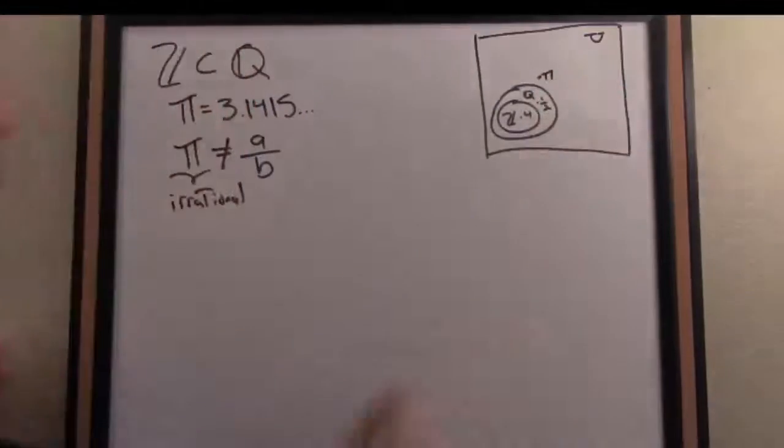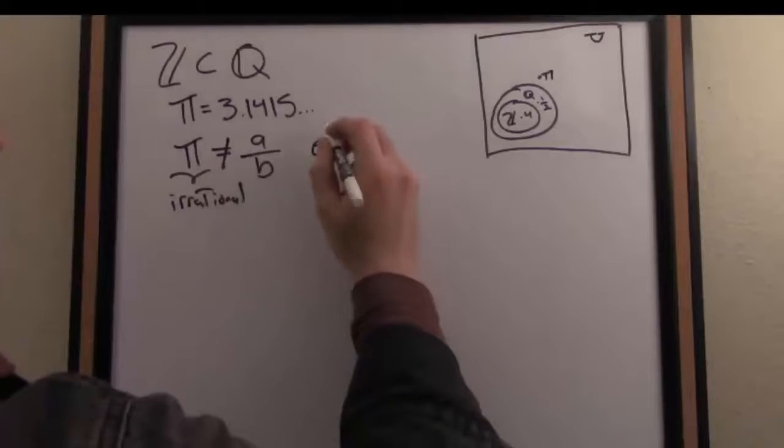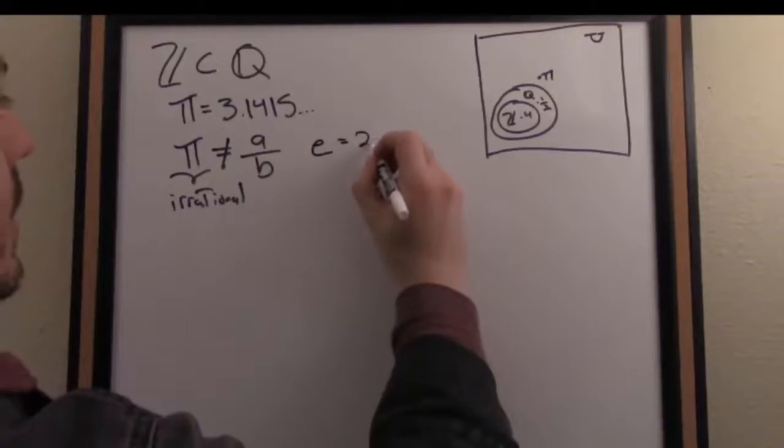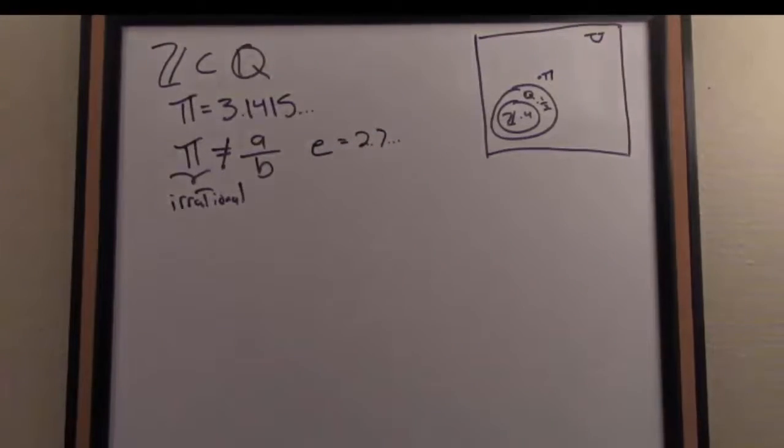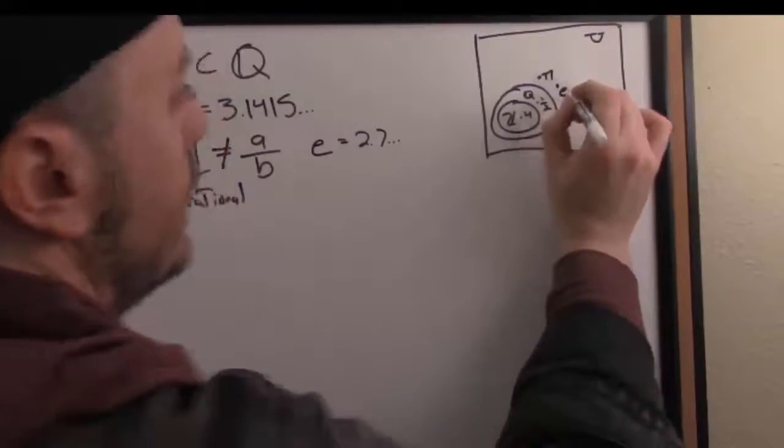So somewhere out here is the number pi. You might know that the number e, also a special number in math and science, it's 2.7 etc., and it has also this nice property that its decimal expansion is non-repeating and infinite. So it's likewise an irrational number.